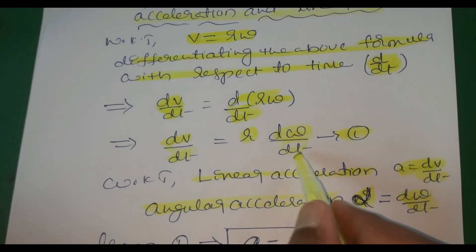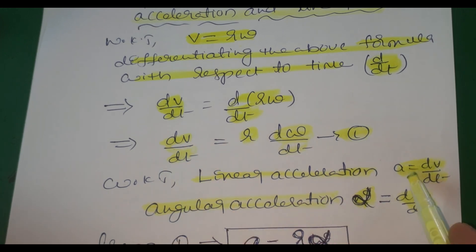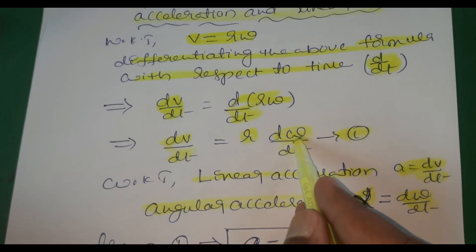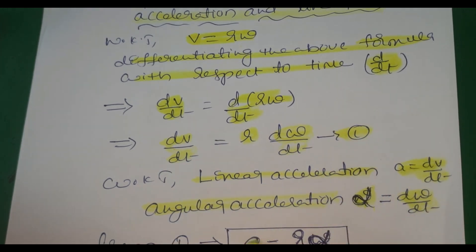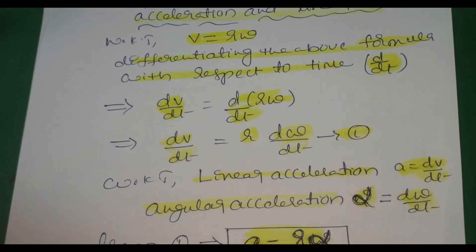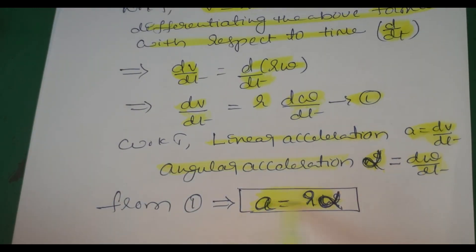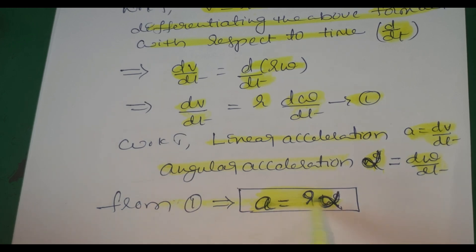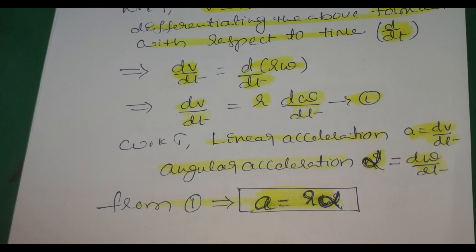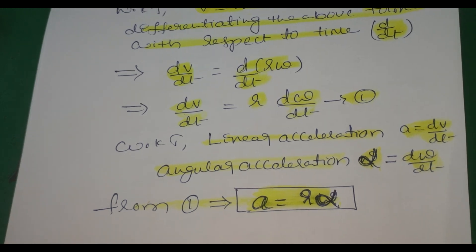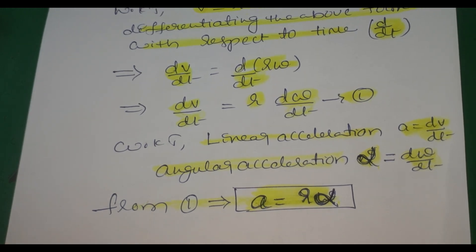Substituting into equation one, dv/dt equals r times d omega/dt, which gives us the formula: linear acceleration a equals r times alpha. This is the important relation between linear acceleration and angular acceleration, used for solving problems. That's all for this topic — see you in the next video with another important topic.